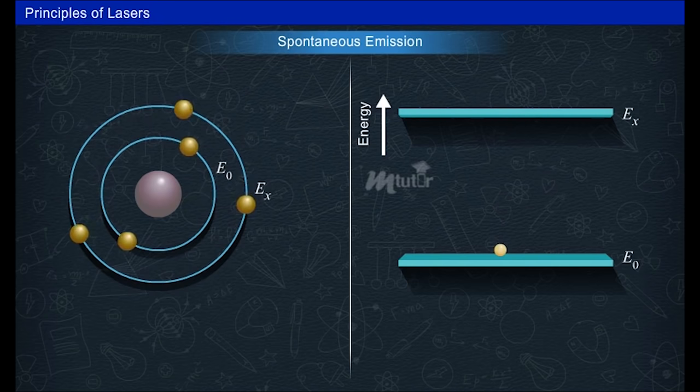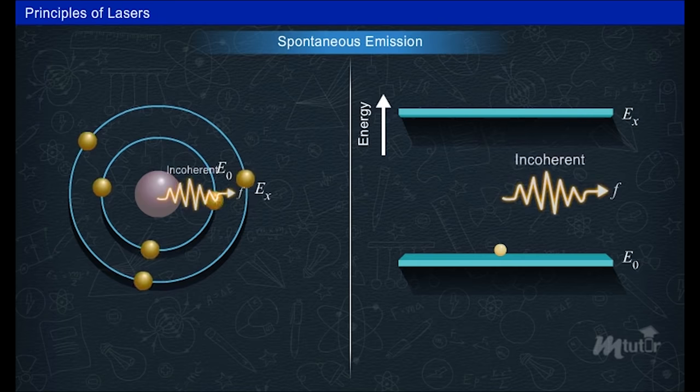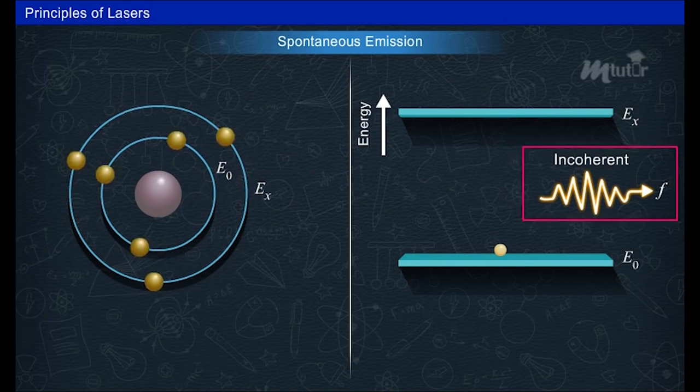It comes back to its original ground state E_0 by losing its energy in the form of photons. These photons are considered as incoherent light as they do not have any correlation in phase.